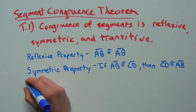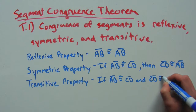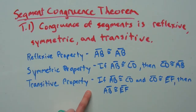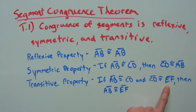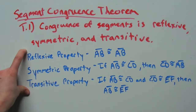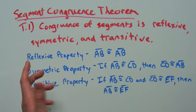And finally, we have the transitive property, which says that if segment AB is congruent to segment CD, and segment CD is congruent to segment EF. These are very similar to the properties of equality, except for the fact that we're dealing with segments as opposed to real numbers.